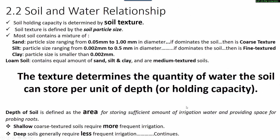Soil and water relationship. Soil holding capacity is determined by soil texture, which is defined by soil particle size. Most soils contain a mixture of sand, silt, and clay. Sand particle size ranges from 0.05 mm to 1 mm in diameter; if sand dominates the soil, it has a coarse texture. Silt particle size ranges from 0.002 mm to 0.5 mm in diameter; if silt dominates, it is fine textured. Clay particle size is smaller than 0.002 mm. Loam soil contains equal amounts of sand, silt, and clay and is medium textured.